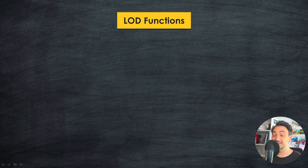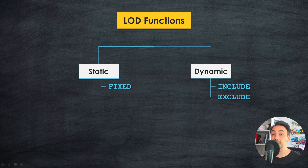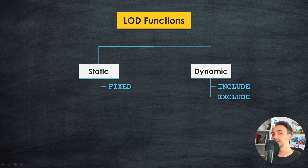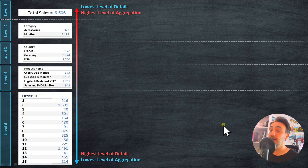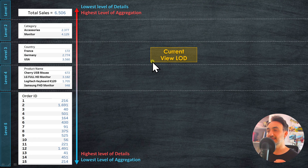Now let's understand the LOD functions. We can split the three functions into two categories. The first is static calculations, which has only one function: fixed. The second is dynamic calculations, which includes include and exclude. If you want a fixed or static calculation, use fixed; if you need something more dynamic, use include or exclude. The dimensions in our visualizations or in the LOD expressions define the level of details, and each dimension has a different level of details.